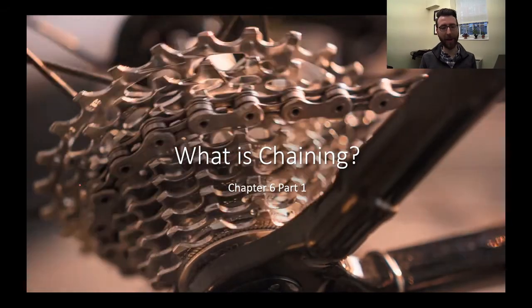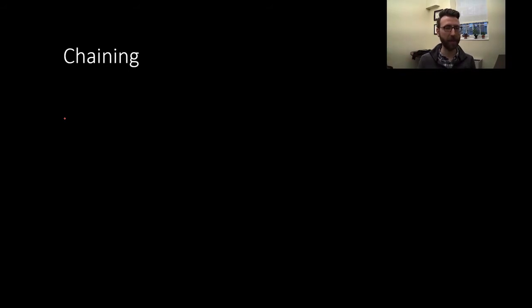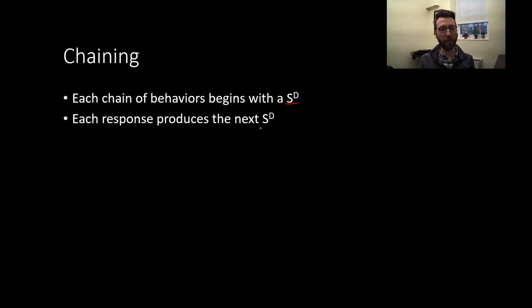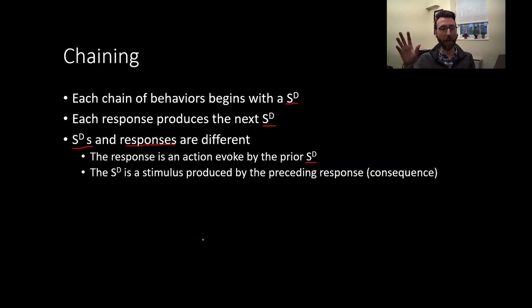Let's start off by talking about what chaining is, how do we define it, and what do we use it for. Chaining is pretty much what it sounds like — chaining a series of behaviors together. Longer or more complicated tasks can be broken down into multiple parts that chain naturally together. Each chain of behavior begins with a discriminative stimulus, and each response performed in the chain will produce the next discriminative stimulus. The response is an action that is evoked by the prior discriminative stimulus.